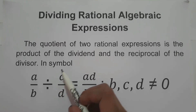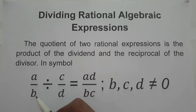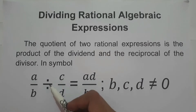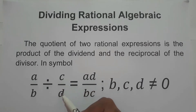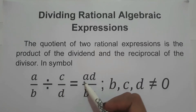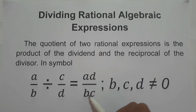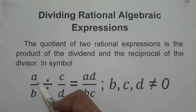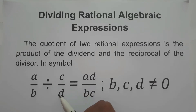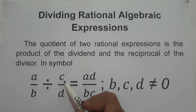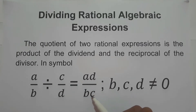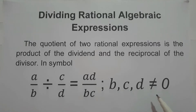So in symbol, we have a over b divided by c over d, that is ad over bc — that is a times d over b times c — where b, c, and d are not equal to zero.